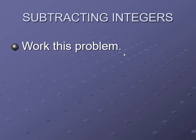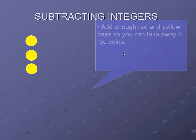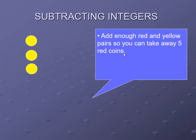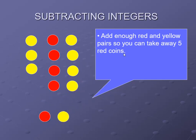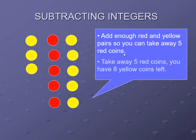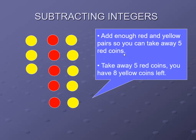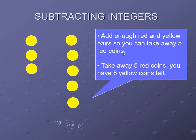In this manner we can do any problem. For the problem plus 3 minus minus 5: start with 3 negative coins. Add enough red and yellow pairs so you can take away 5 red coins — add 5 pairs of zeros. Now remove 5 red coins. You have 8 yellow coins left, which represents positive 8. So the number equation is plus 3 minus minus 5 equals plus 8.